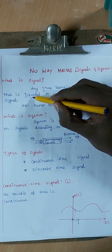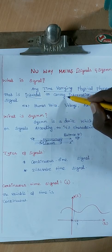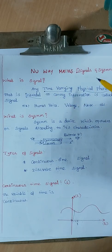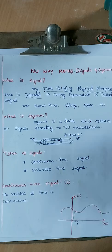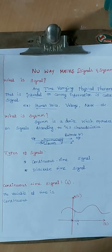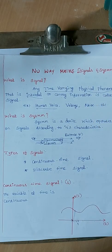What is the intention? The intention is to convey information. So a time-varying physical phenomenon intended to convey information is a signal. The best human-world example is voltages.